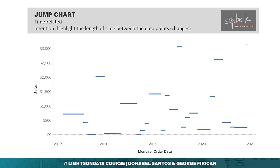One more variation of this line chart is what we call a jump chart. The jump chart is similar to a step line, but we do away with the vertical line that connects the points. We can use a jump chart if what we wish to emphasize is the length of time between changes, and not necessarily the magnitude of the changes.